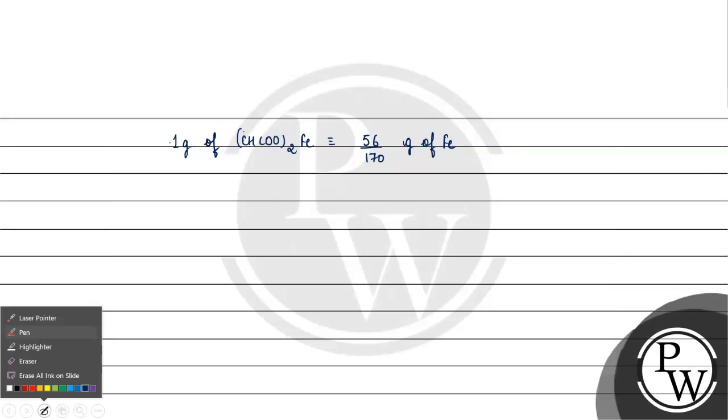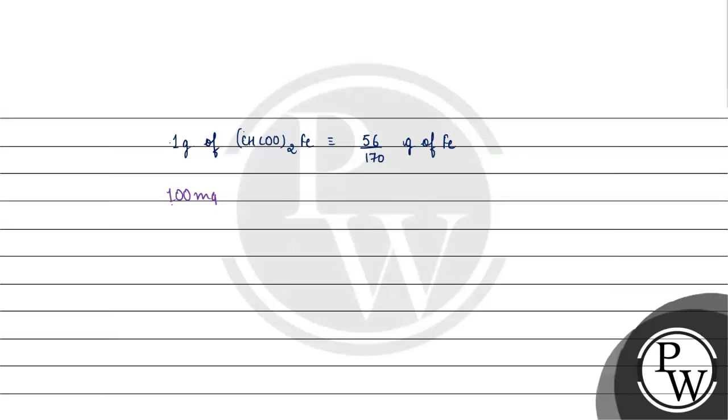Agar baat karein 1 gram of iron fumarate ki, to usme basically 56 by 170 gram of iron present hoga. So agar 100 milligrams of iron fumarate mein kitna iron present hoga?